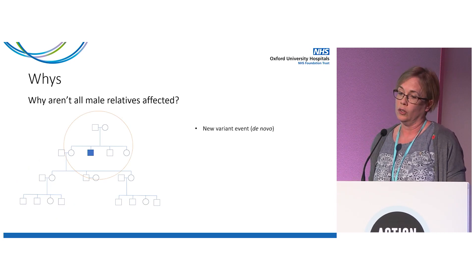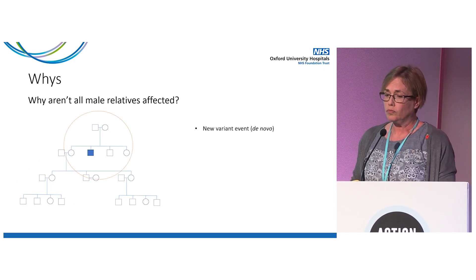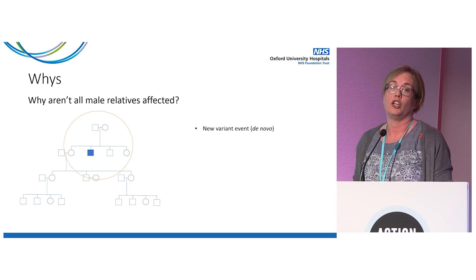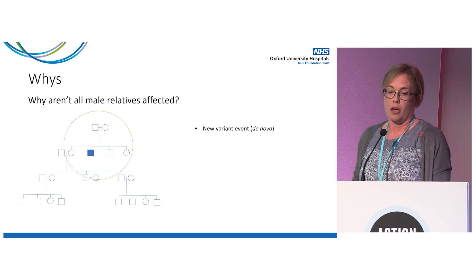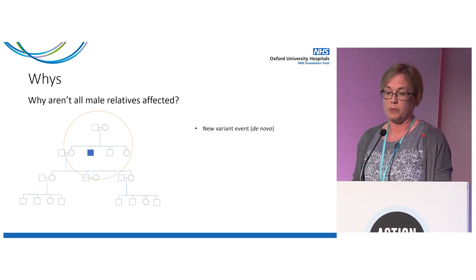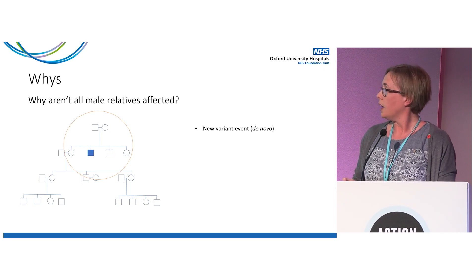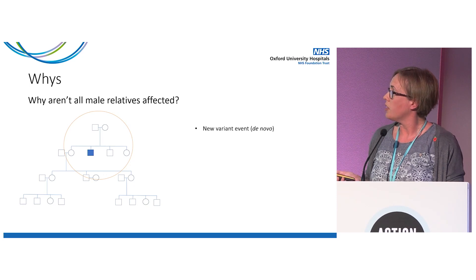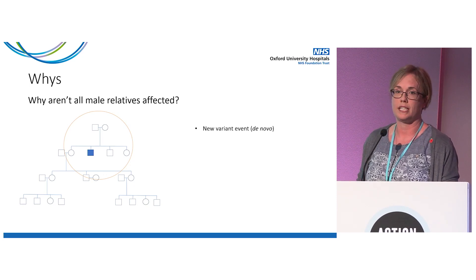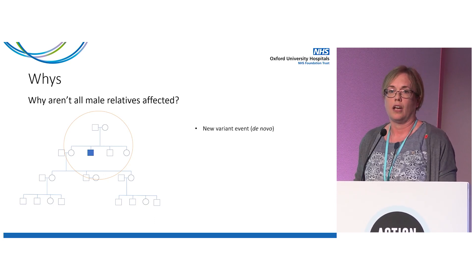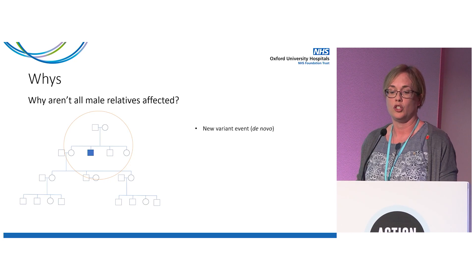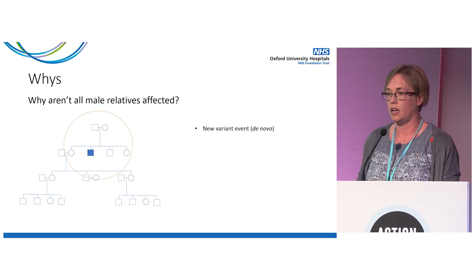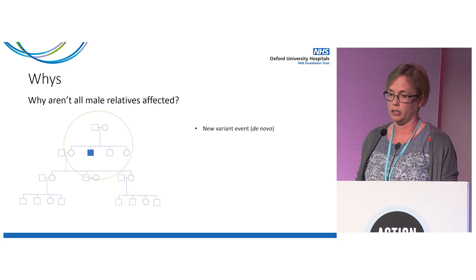Another reason why all males may not be affected is that a variant may have arisen in that person, or more likely in the egg that was fertilized and developed into that person. In which case, if you tested the mother's blood, she would not be a carrier as such, but there is the possibility that a subset of her egg cells do contain the variant — so there is still a risk of having more than one child with Duchenne.